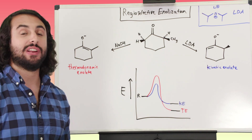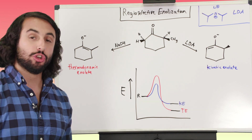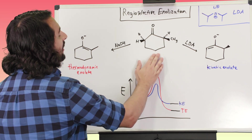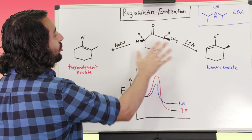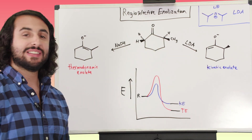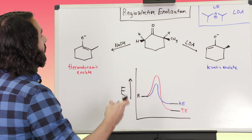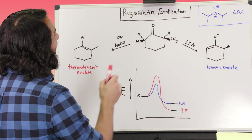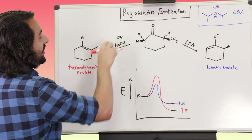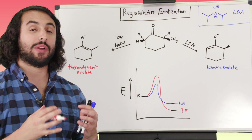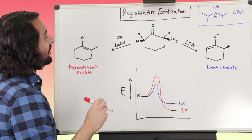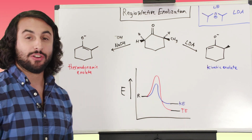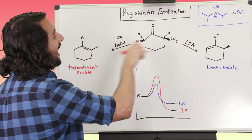This is an excellent opportunity to talk about thermodynamic control versus kinetic control. Let's say we have this substrate here and look at what will happen if we use two different bases. Let's start with sodium hydroxide. Hydroxide is very small and very sterically unhindered, so it is going to experience a similar activation energy when it approaches either side of the molecule.